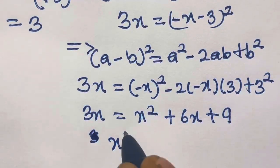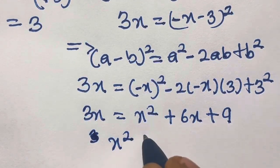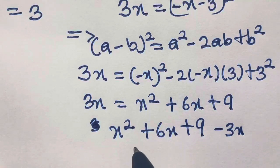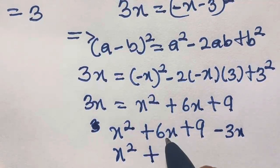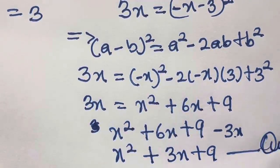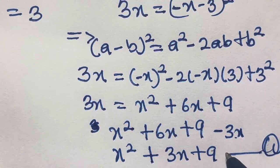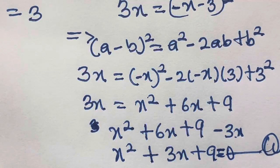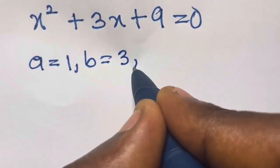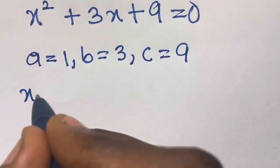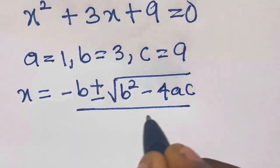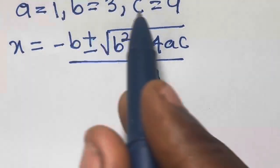Transferring 3x to the right side, we have x squared plus 6x minus 3x plus 9, which gives us x squared plus 3x plus 9 equals 0. This is a quadratic equation. We declare a equals 1 (coefficient of x squared), b equals 3 (coefficient of x), and c equals 9 (constant). The quadratic formula is x equals minus b plus or minus square root of b squared minus 4ac, all divided by 2a.